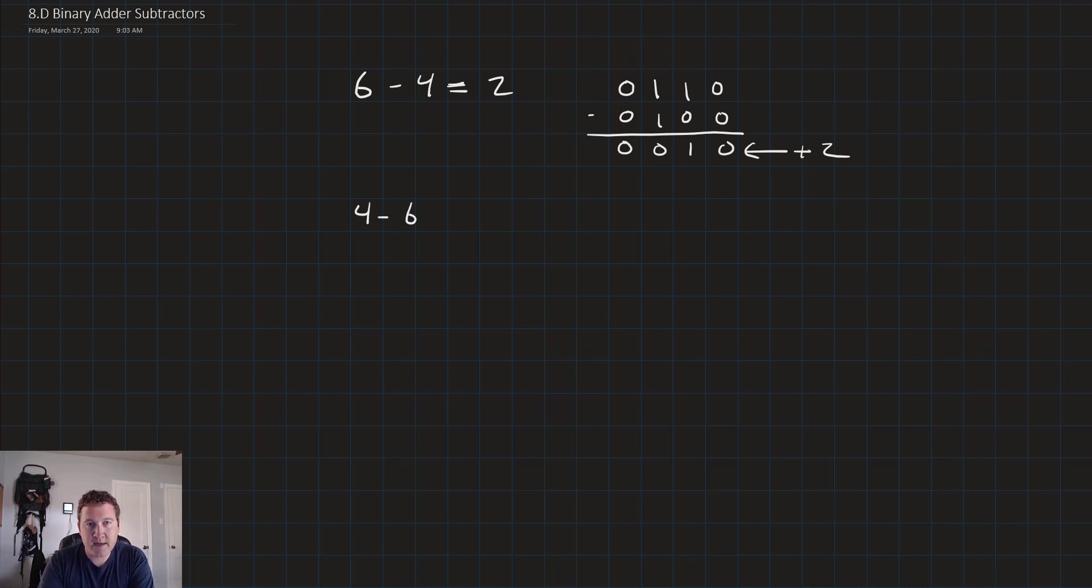What if we wanted to flip this over and get 4 minus 6, which we know in base 10 is equal to negative 2? So let's look at that. 0100 and 0110, and we go to subtract, 0 minus 0 is 0, 0 minus 1 means we have to borrow. So we borrow from the 1, 0 becomes 2, 2 minus 1 is 1. Now it was 0 minus 1, and we run into a problem, right? We need to borrow, but there's nothing to borrow from.